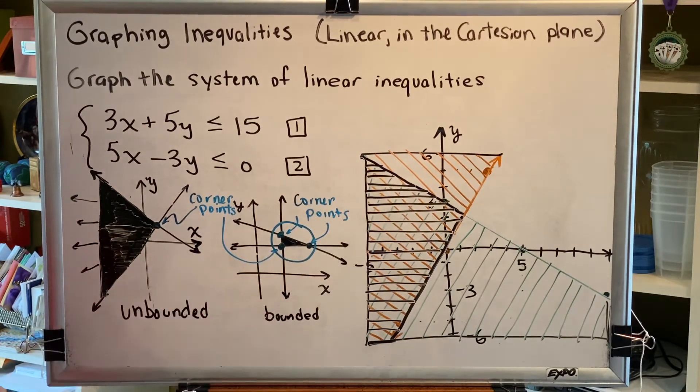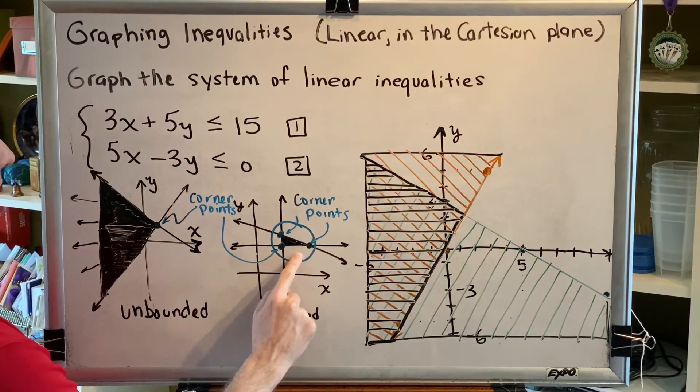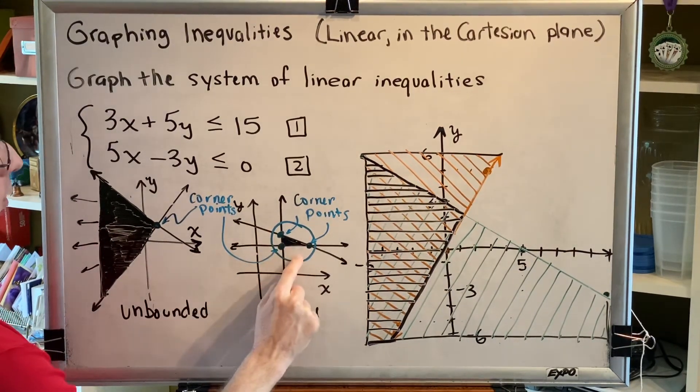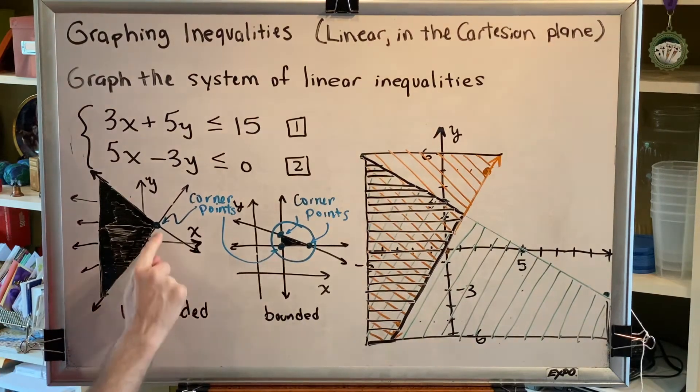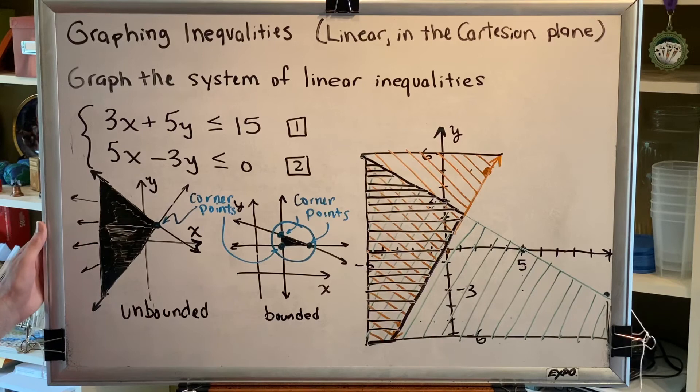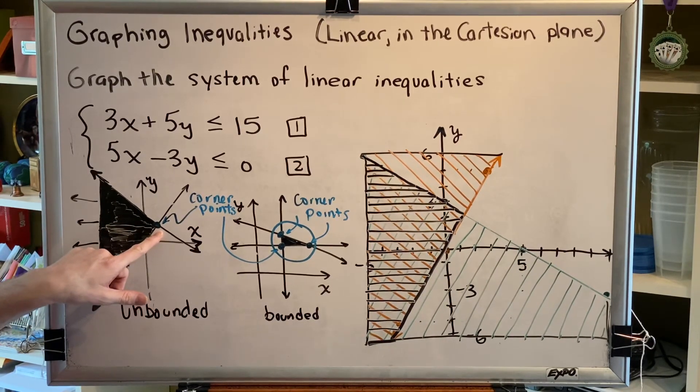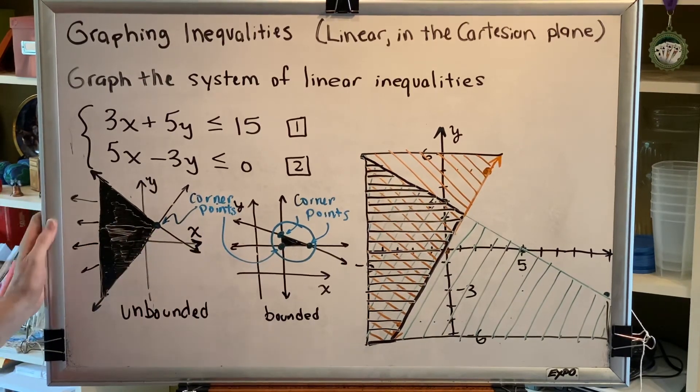In both of these pictures I have also shown an example of what corner points look like. So the solution of this triangle region has three corner points. This solution region has just one corner point. So if you are asked to identify the corner points of your solution region, you're looking for the intersection of the lines that are at the boundary of your solution region.